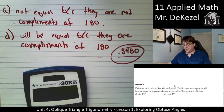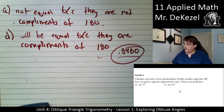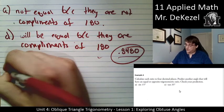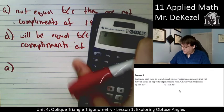Let's go to the next example here. Calculate each ratio to four decimal places. And predict another angle that will have an equal or opposite. So equal, which means the same sign or opposite, which is the opposite sign, positive or negative trigonometric ratio. And check our prediction. So for A, let's continue here.